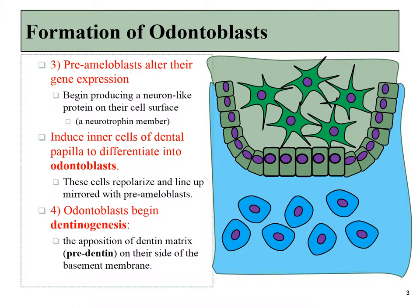Those pre-ameloblasts are different from the regular inner enamel epithelium. They begin producing a neuron-like protein on their cell surface called a neurotrophin, which is a morphogen. This morphogen is usually expressed in the brain, but it's not entirely strange that it's being expressed here, because after all, the central nervous system differentiated from epithelial cells — so we've got a similar type of thing happening here, epithelial cells becoming a little bit more neuronal.